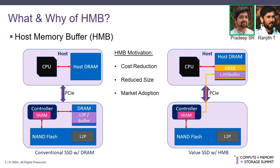The motivation for value SSDs is that in HMB-based SSDs, the DRAM chip is removed. As a result, there is significant cost reduction because DRAM costs 10x more than NAND, and HMB-based SSDs can come in smaller sizes because you save real estate on the PCB. This led to good market adoption because the cost is reduced, the size is less, and the device still performs much better than HDDs.